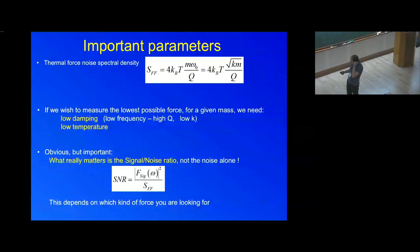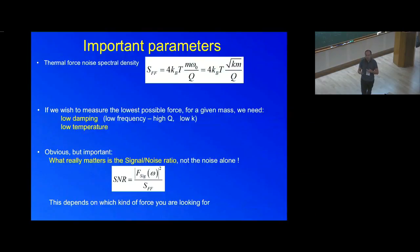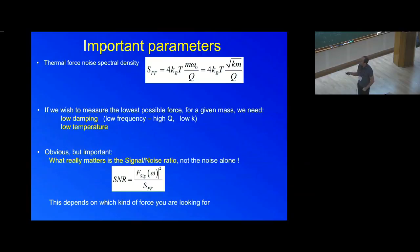Going back to the expression of force noise for a generic mechanical resonator: if you want to reduce the thermal noise as much as possible, you need to reduce temperature as much as you can, have a high quality factor to decouple your system from the thermal bath, and if you want to reduce the absolute value, you want a light system — low mass and low frequency. What is really important in measurement is the signal-to-noise ratio, which depends very much on the signal you are going to measure.